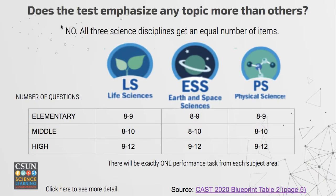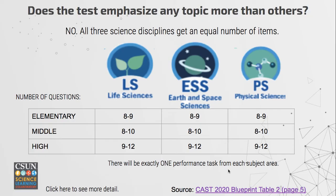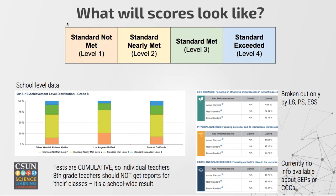You might be wondering whether the test emphasizes any topic more than others, and the answer is no. This is a cumulative test that covers everything, and all three science disciplines get an equal number of items — an equal number of discrete items and exactly one performance task from each subject area. You can find out more by clicking on the CAST 2020 blueprint.